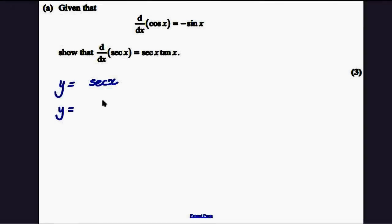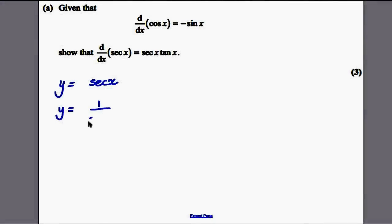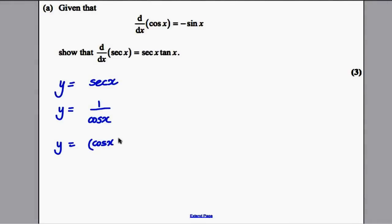The first thing I like to do, just to keep the notation nice and clear, let y equal sec x. We want to find dy over dx, but let's firstly write this in terms of cos. That's 1 over cos x. And in index form, that's cos x to the power of minus 1.